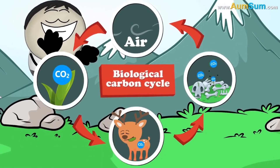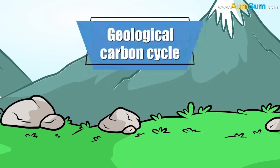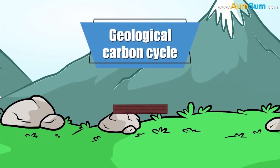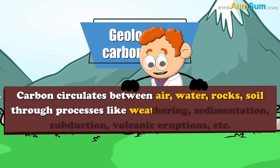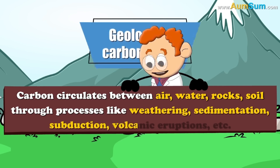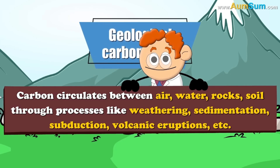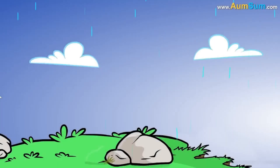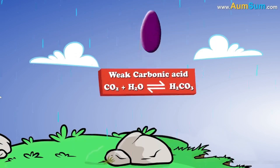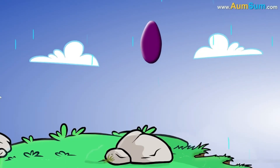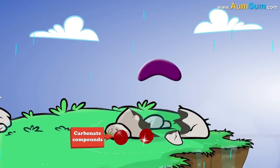Now let's talk about the other type of carbon cycle — the geological one. In the geological carbon cycle, carbon circulates between air, water, rock, and soil through processes like weathering, sedimentation, subduction, volcanic eruptions, etc. In the atmosphere, when carbon dioxide dissolves in raindrops, it forms weak carbonic acid. This acidic rainwater, on reaching the earth's surface, slowly starts causing the weathering of the rocks, forming carbonate compounds.